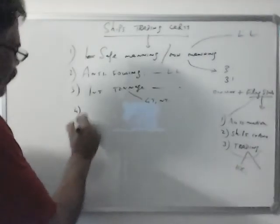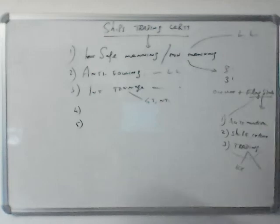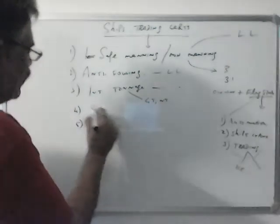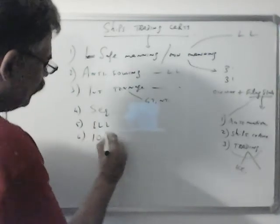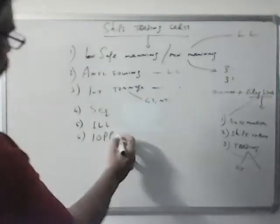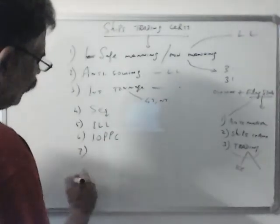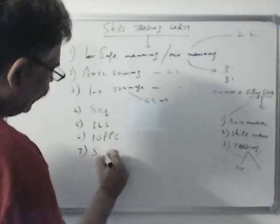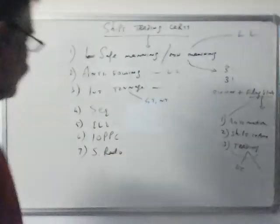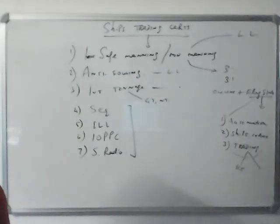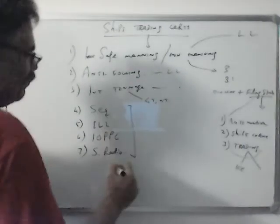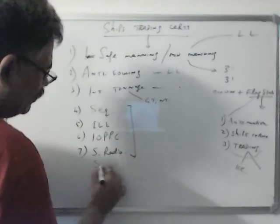Then we have some certificates which are five yearly. Five yearly renewal with annual surveys every year. For example: Safety Equipment, International Load Line, IOPP (International Oil Pollution Prevention Certificate), Safety Radio Certificate, and Safety Construction. These are five yearly. How to calculate when the next annual survey is due? We have to see the expiry dates of these certificates.